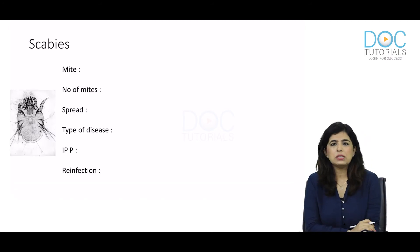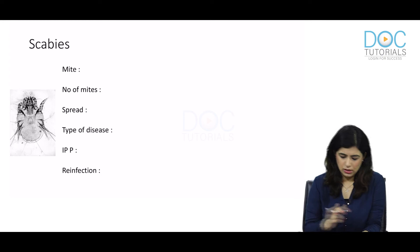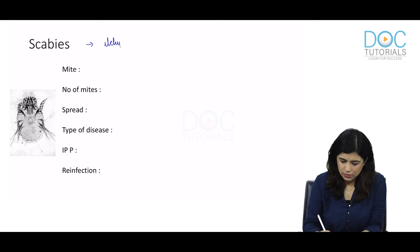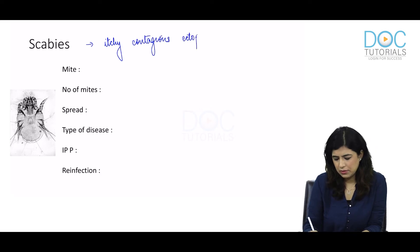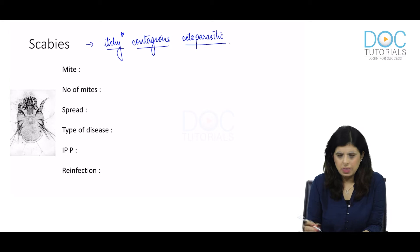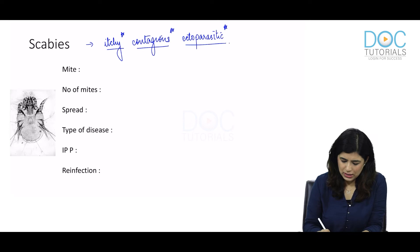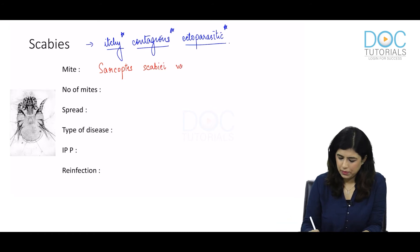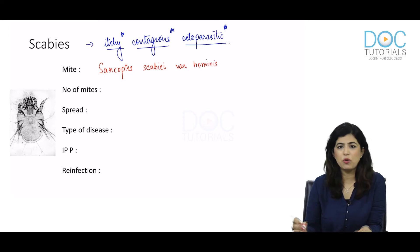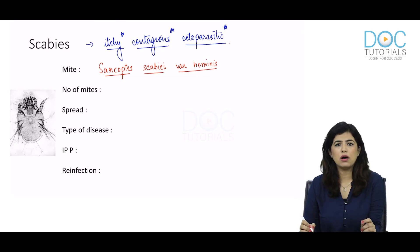Starting with scabies — scabies is an itchy, contagious ectoparasitic infection of the skin. The name of the causative mite is Sarcoptes scabiae var. hominis.